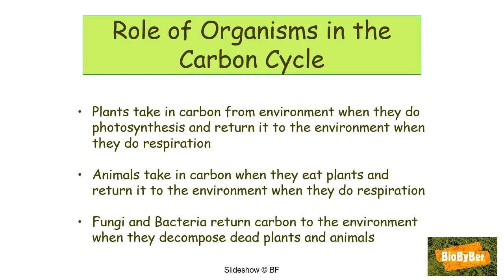What is the role of organisms in the carbon cycle? Plants take in carbon from the environment through photosynthesis and return it when they carry out respiration. Animals take in carbon when they eat plants and return it to the environment through respiration. Fungi and bacteria return carbon to the environment when they decompose dead plants and animals. It is very important to understand the role of all of these organisms in the carbon cycle.